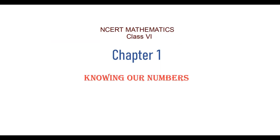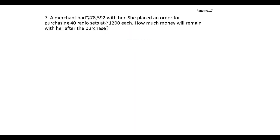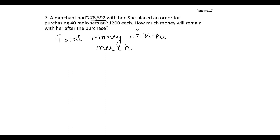In this video we will see mathematics class 6, chapter 1, which deals with knowing our numbers. The next problem is number seven: a merchant had rupees 78,592 with her. She placed an order for purchasing 40 radio sets at 1,200 each. How much money will remain with her after the purchase?